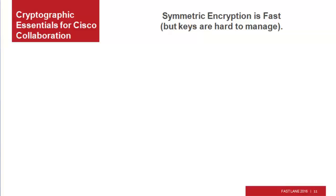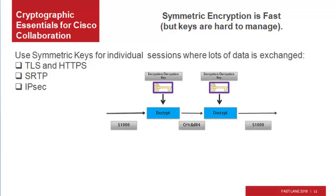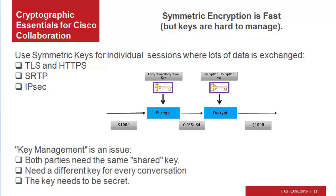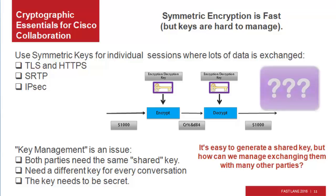Symmetric encryption is fast, but keys are hard to manage. Use symmetric keys for individual sessions where lots of data is exchanged. Protocols using symmetric encryption include TLS, HTTPS, SRTP for secure voice and video sessions, and IPsec. Key management is the key challenge with shared symmetric keys: both parties need the same shared key, we need a different key for every session, keys are short-lived and must be changed frequently, the key needs to be secret, and we need a way to exchange the key in secret — but the whole purpose of the key is to allow us to exchange information in secret. So we need to secretly exchange many keys with many different parties.